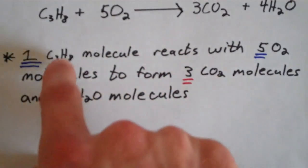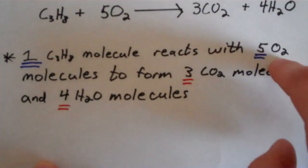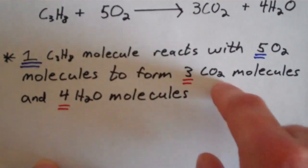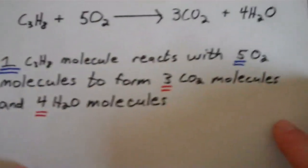So we could say that 1 mole of C3H8 reacts with 5 moles of oxygen to form 3 moles of CO2 and 4 moles of water.